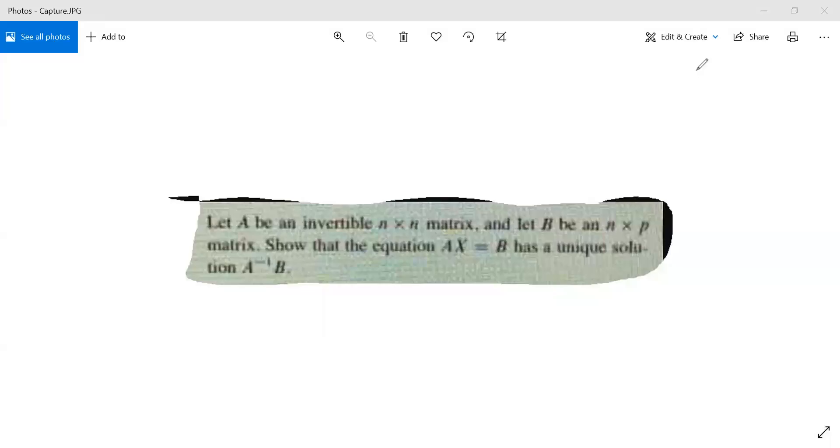First, we're going to suppose that A is invertible - that's given to us. B is n by p, and we're going to show this has a unique solution. So suppose the equation AX = B has two solutions.